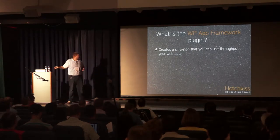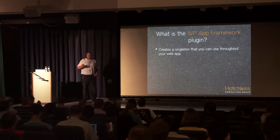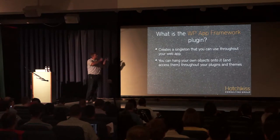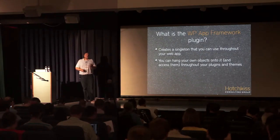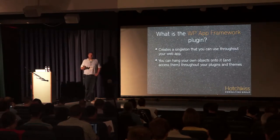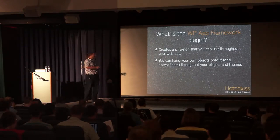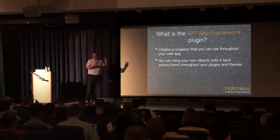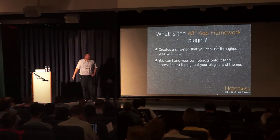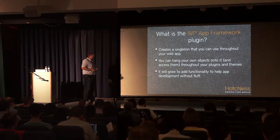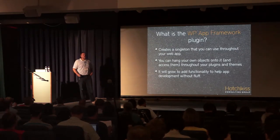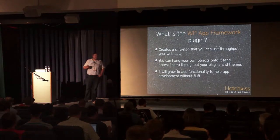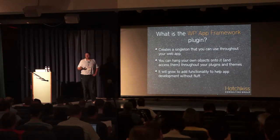What's my plugin? It creates a singleton that you can use throughout your web app. You can hang your own objects onto it and access them throughout your plugins and themes — you can extend it. The core WP App Framework plugin on its own does very little. The only actual functionality it adds is the ability for users to log in by their email addresses. Aside from that, you write your own plugins that hook onto it — this just creates a tree you can hang your own objects and projects off of. It will grow to add functionality to help app development without adding fluff, and is meant strictly for developers looking to do this kind of stuff with WordPress.